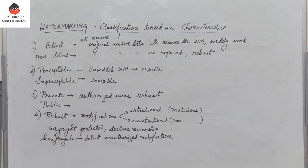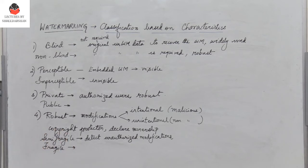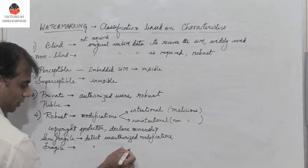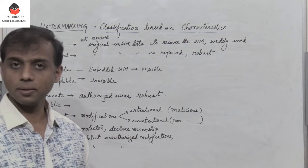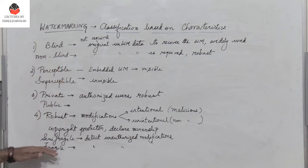Fragile watermarks are used to detect any unauthorized modifications. The slightest modification of the watermarked image will alter or destroy the fragile watermark. Any modifications done to an image with a fragile watermark will lead to the watermark being destroyed or altered.